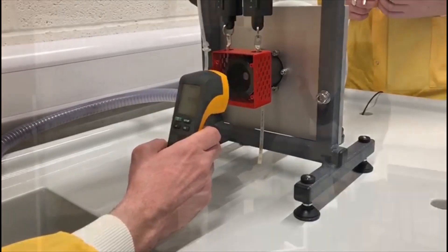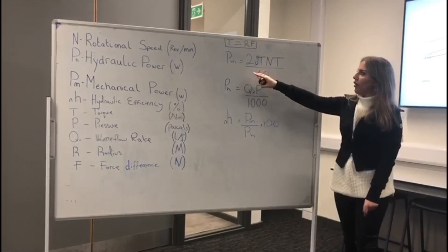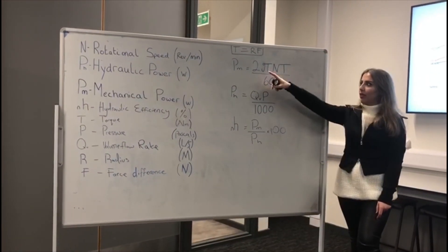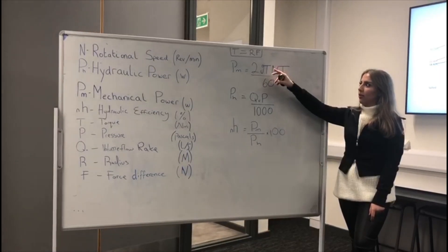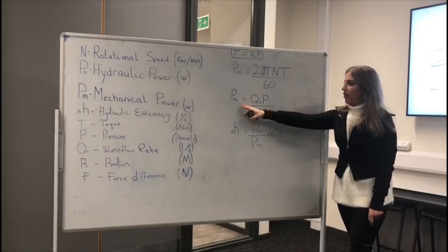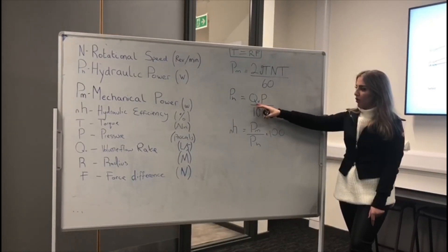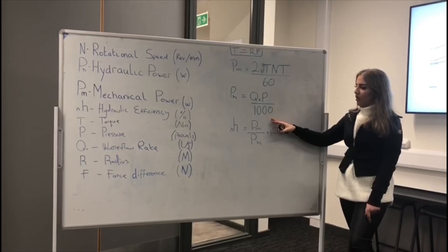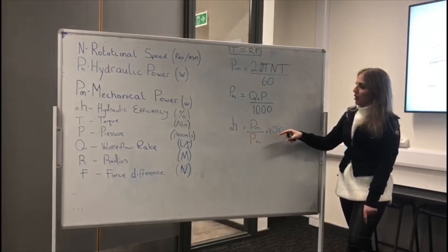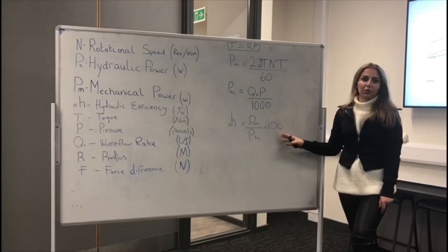Here we can find the hydraulic efficiency by calculating the mechanical power, which is 2π times rotational speed times torque, divided by 60. We can find torque by multiplying radius by the force difference. The hydraulic power is found by multiplying the volume flow rate by pressure, divided by 1000. Hydraulic efficiency is then the mechanical power divided by the hydraulic power, multiplied by 100.